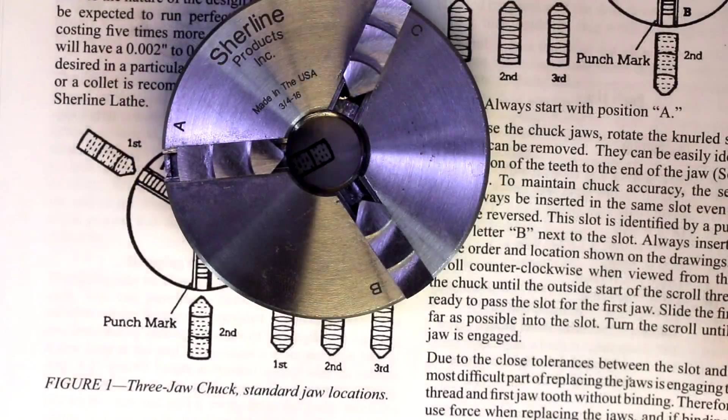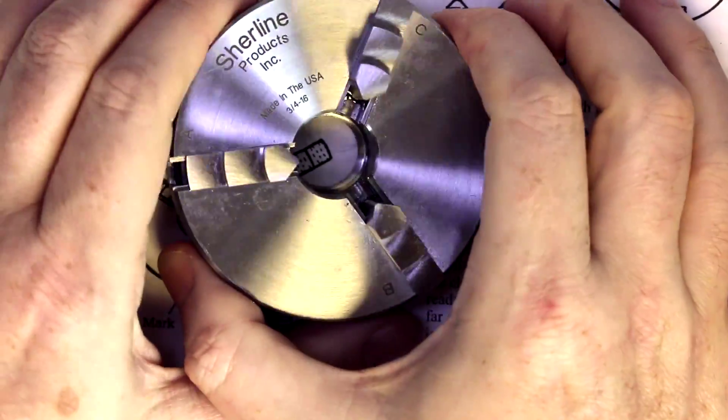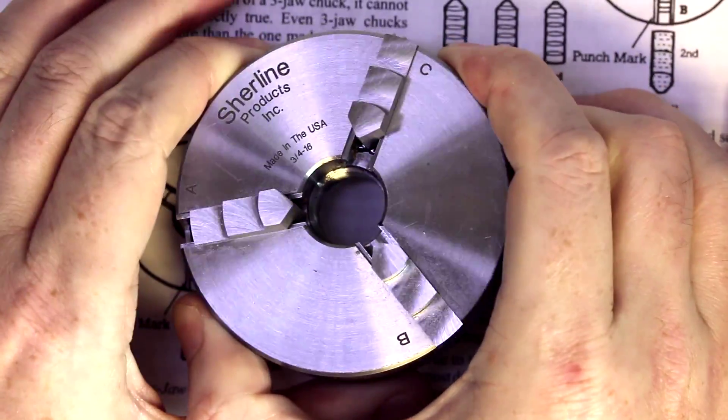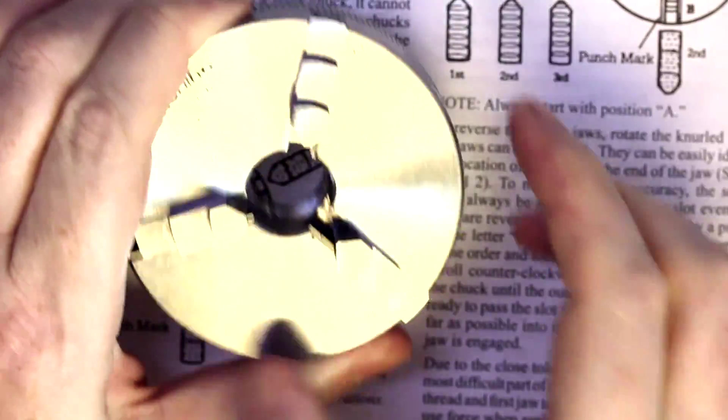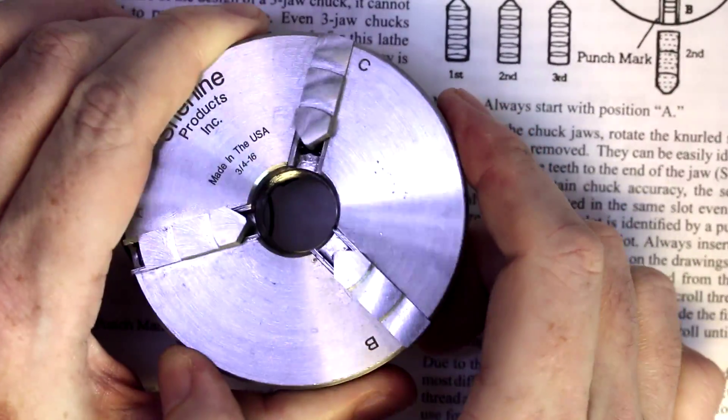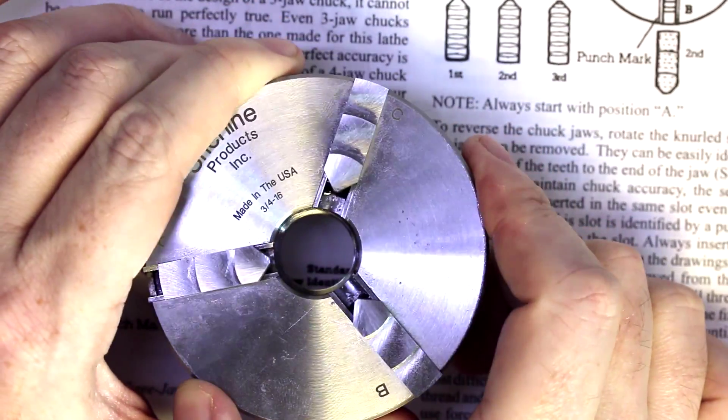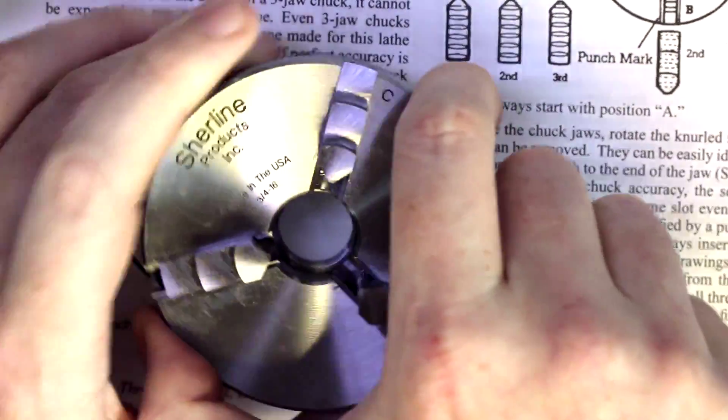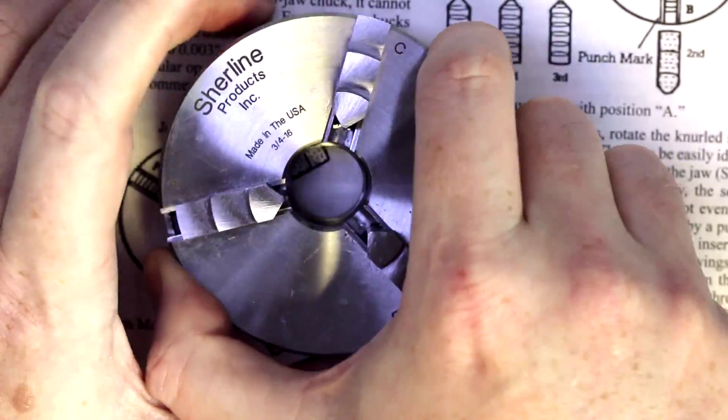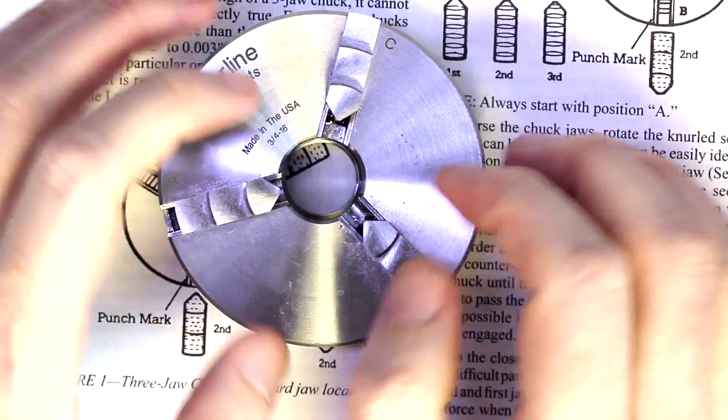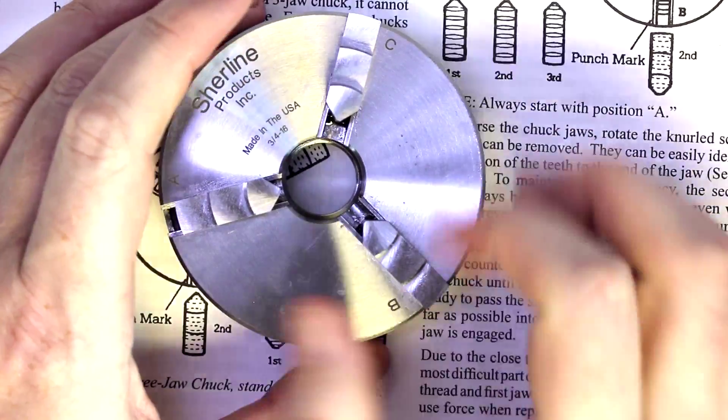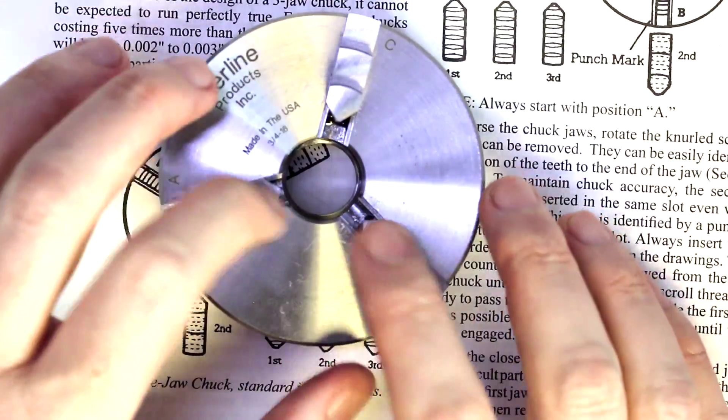Now just for a visual demonstration, I went ahead and took the jaws out and I put them back in pretty much randomly. And you can see that their distance to center is not concentric anymore. So this is definitely a situation we want to avoid. If you're doing this frequently, you can also damage the chuck because these do kind of wear into their correct spots.